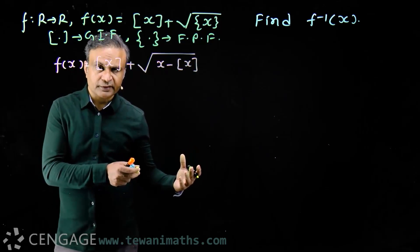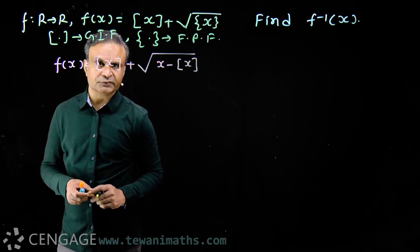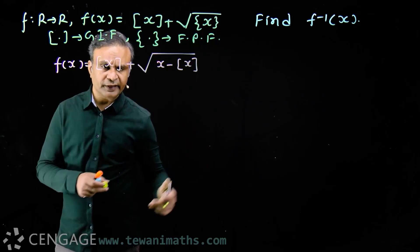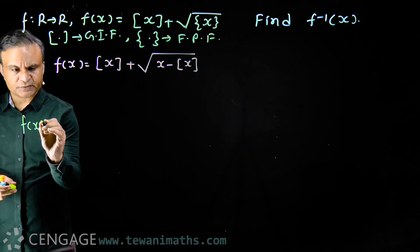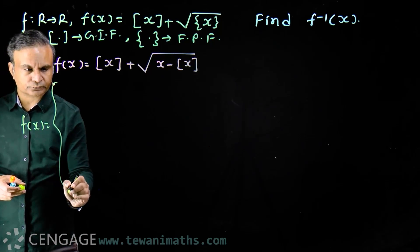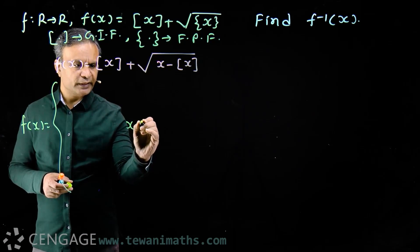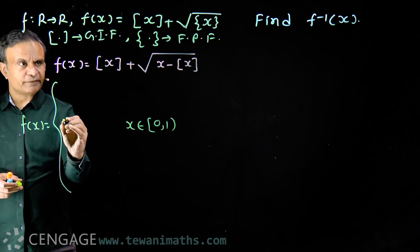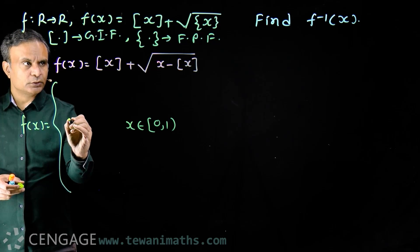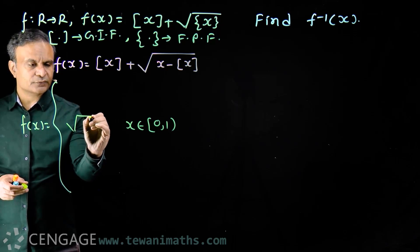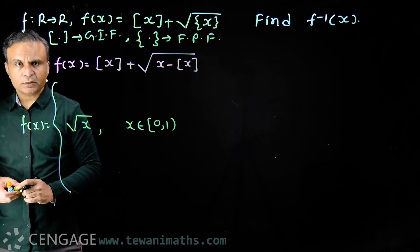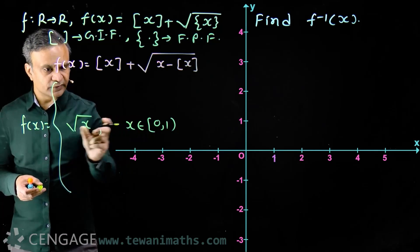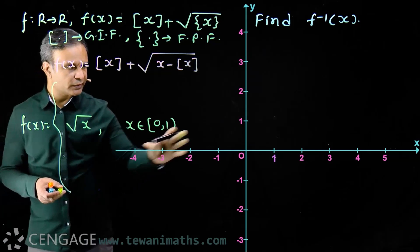Now let's write some branches of f(x) interval-wise. For x belonging to the closed interval [0, 1], the greatest integer of x is 0, so f(x) = 0 + √x = √x. We can draw the graph of this — it is part of a parabola.